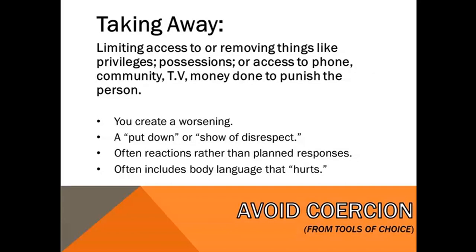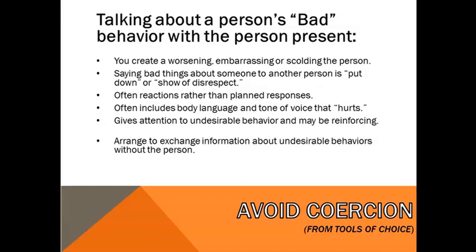The last one is talking about a person's bad behavior in front of them — super embarrassing. It definitely happens: if you support someone at the doctor's office, or 'do you know what your kid did today?' — there are lots of opportunities where we're talking about people in front of them. Best practice is to avoid having conversations about people in front of them. It's hurtful and damaging to our relationships. Those are the 10 examples of common types of coercion that are hurting our relationships.